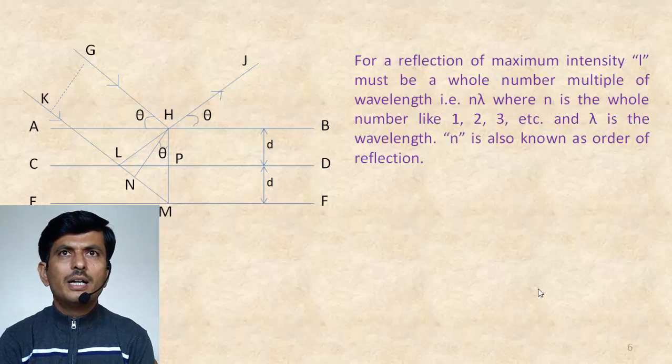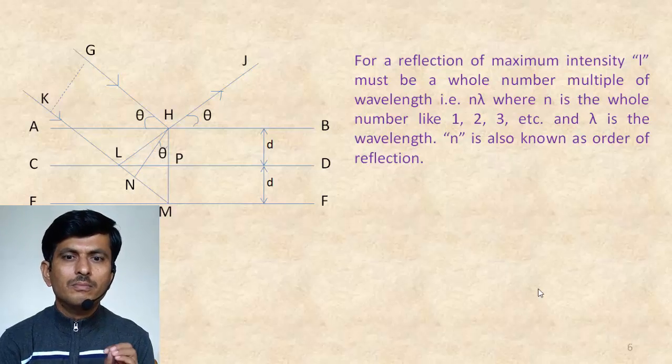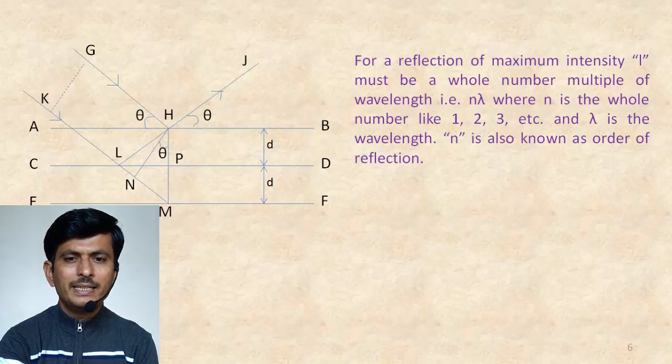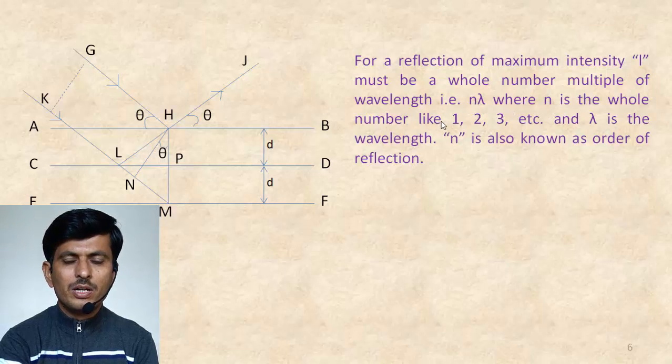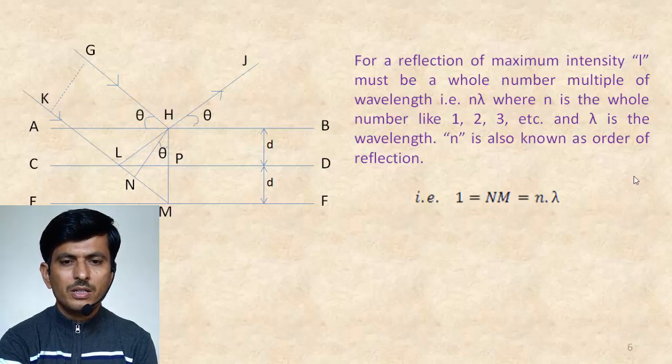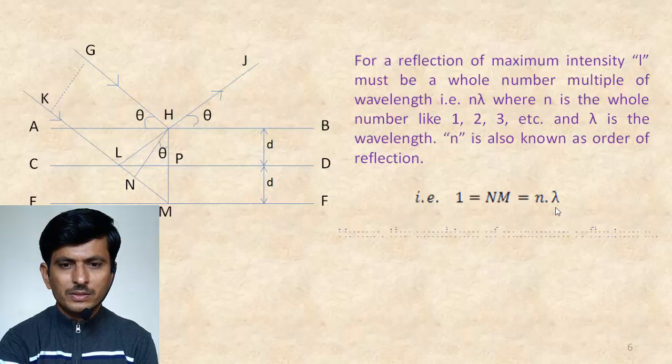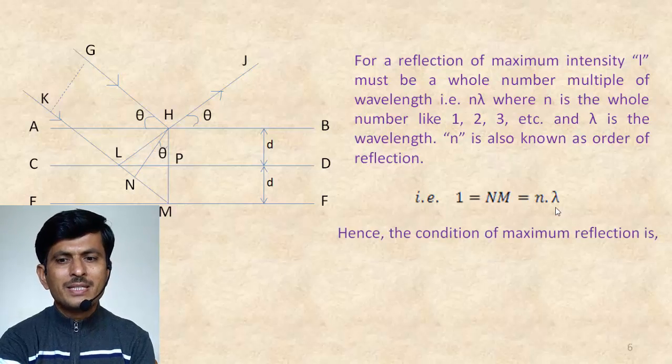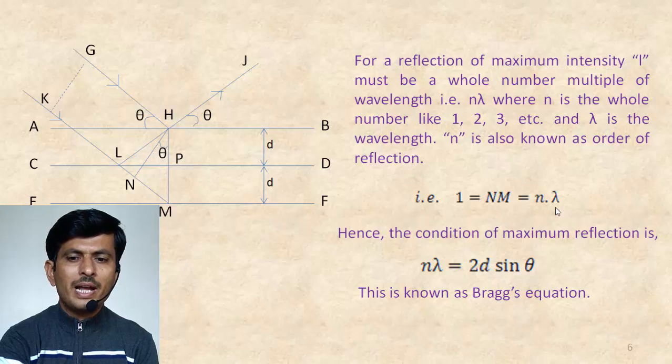Now, for a reflection of maximum intensity, L must be a whole number multiple of wavelength, that is N lambda, where N is whole number like 1, 2, 3, etc. And lambda is the wavelength. N is also known as order of reflection. Therefore, we can write L is equal to NM, which is equal to N lambda. Therefore, condition of maximum reflection is N lambda is equal to 2D sin theta, and this is known as Bragg's equation.